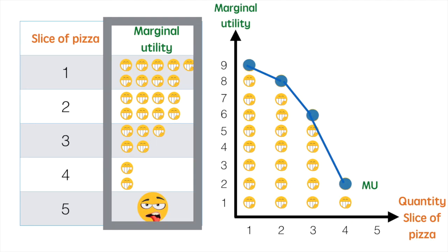If pizza slices cost $2, I'd eat 4 slices. Even if they cost $1, I would still stop at 4 slices. Remember, after the fourth slice, my utility drops to 0 or below.